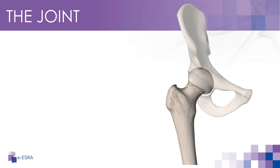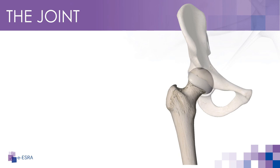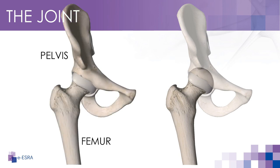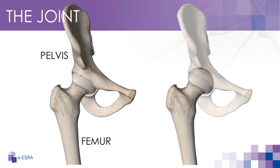The hip joint is a ball and socket joint that connects the femur bone to the pelvis. It is one of the largest and most stable joints in the human body, providing support and stability for standing, walking, running and other weight-bearing activities. It is comprised of two bones: the thigh bone or femur, and the pelvis, which is made up of three bones called ilium, ischium and pubis.